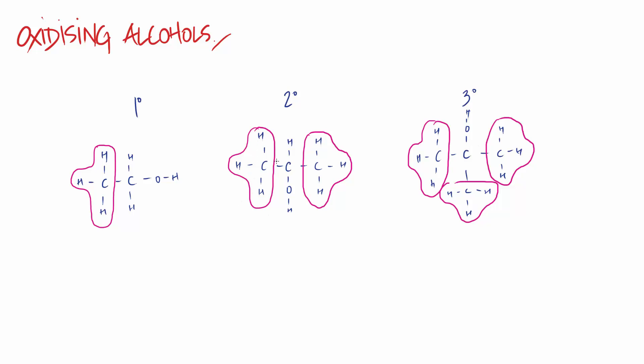What I mean by alkyl group, by the way, is this group here. Whilst we wouldn't name them necessarily as alkyl groups - this would just be propan-2-ol - I'm calling them alkyl groups in relation to them being attached to the carbon. I'm not talking about the nomenclature here, I'm talking about what is actually attached to the carbon.